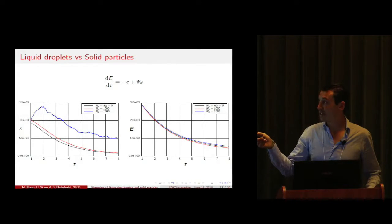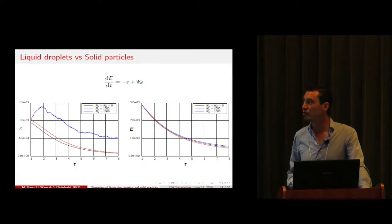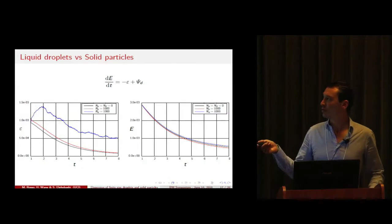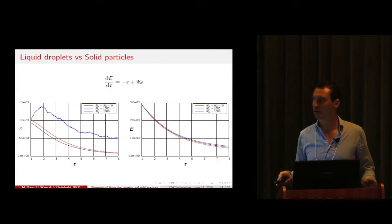On the right-hand side we have the ratio of turbulent kinetic energy dissipation in time, which is shown in the left plot, and finally we have a term psi_d which is due to the effect of the dispersed phase.